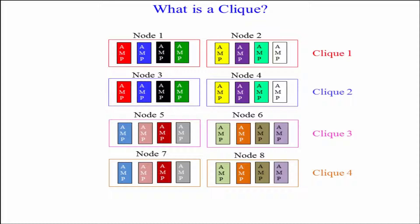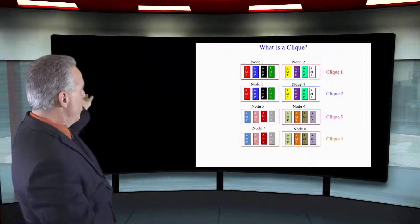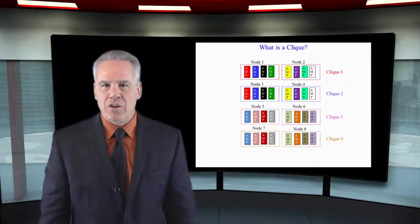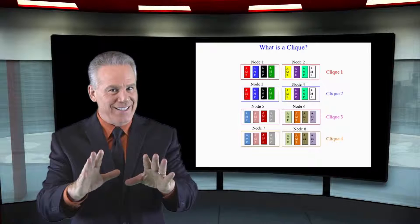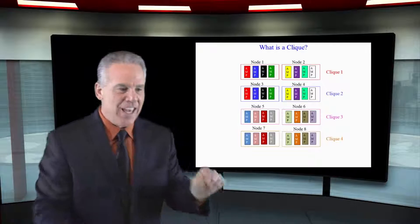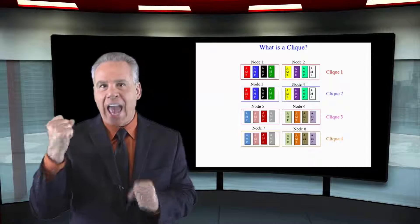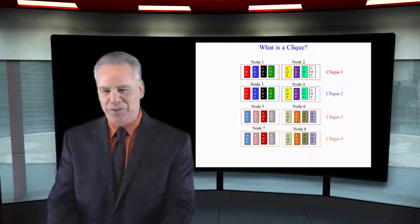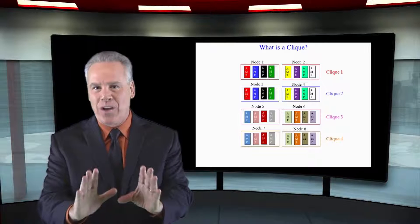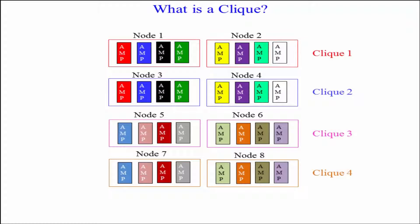Now I want you to notice that the first node and the second node are considered in the same clique. What this really means is, very simply, if by chance someone took a hatchet and went to node one and destroyed it — or there was a fire or any disaster — all of the amps in node number one would migrate over to node two and say, 'I hear it's a little crowded in here, but we've come to operate inside this node.'